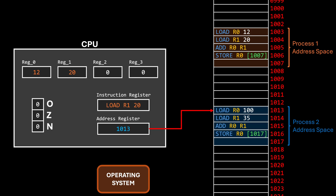Now that the program counter points to the executable code of the second process, we can say the CPU is allocated to it. Note that while the second process has control of the CPU, the data the first process was working with is still present in the registers. We assume the second process is not malicious. However, when the operating system must reallocate the CPU back to the first process, we realize we didn't store the program counter address anywhere — so we can't resume the first process.